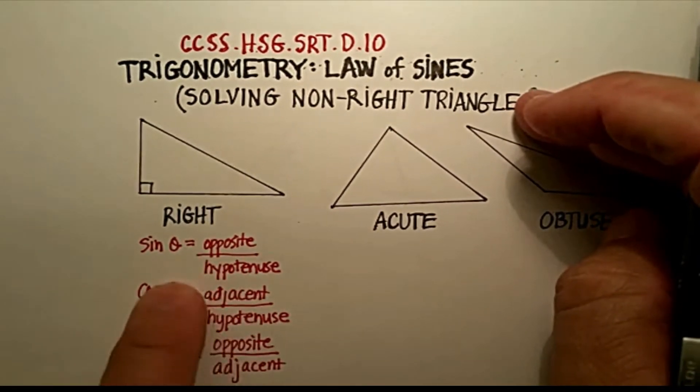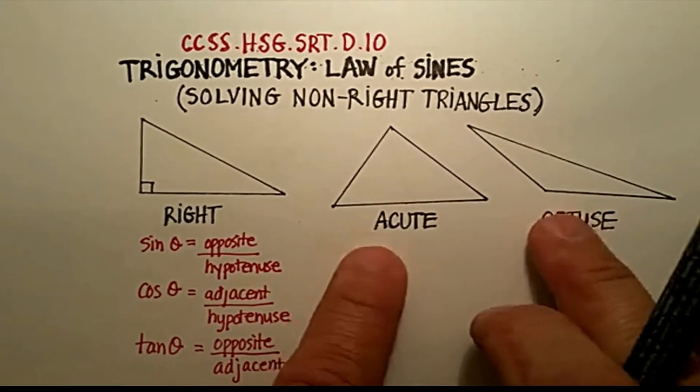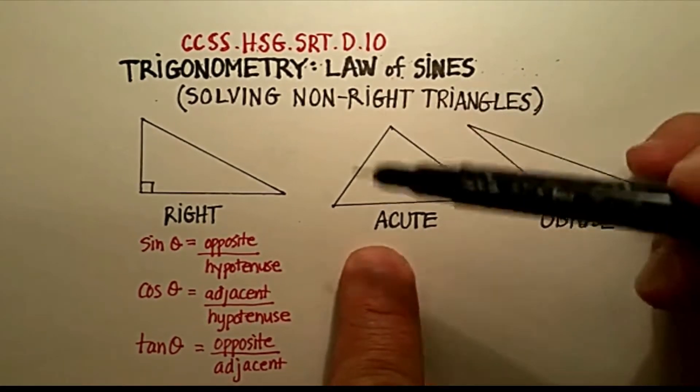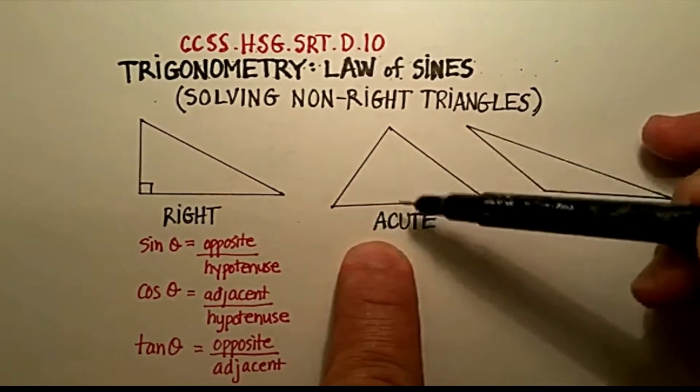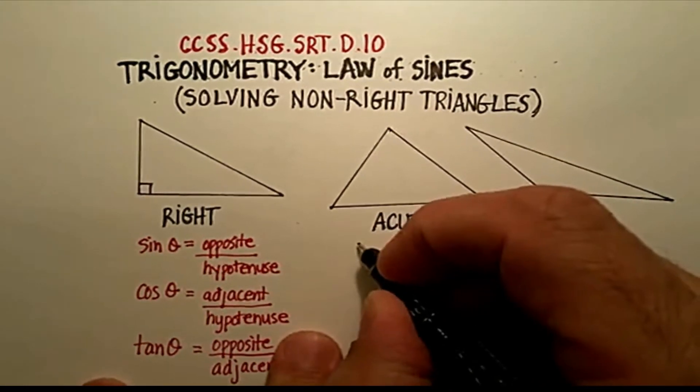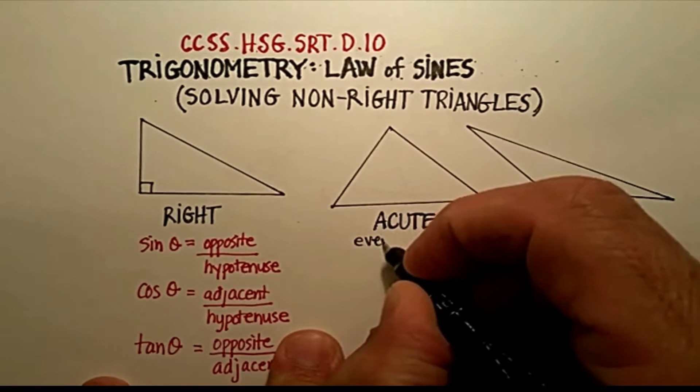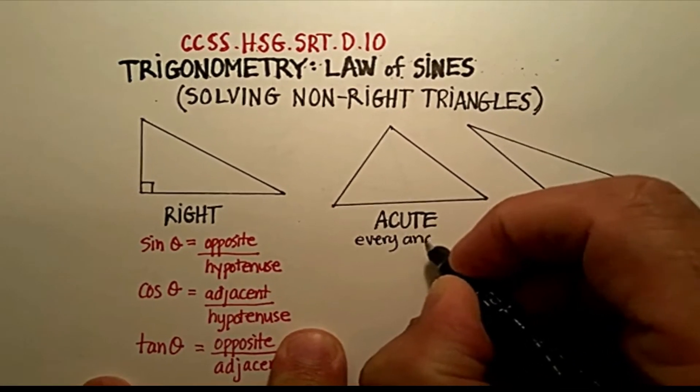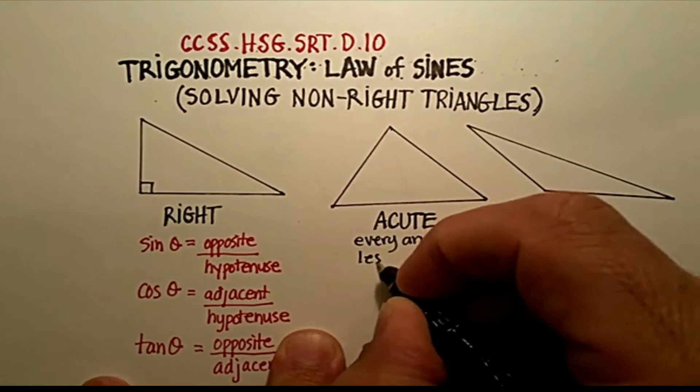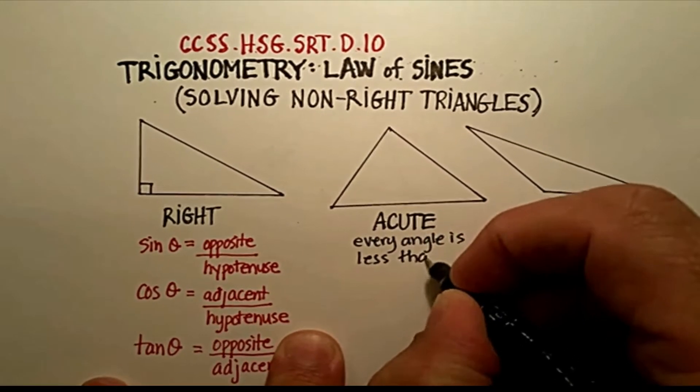However, these functions do not work for the other two types of non-right triangles. Now, let's briefly go over those. Remember that there are acute triangles where every angle is less than 90 degrees, if you remember that.